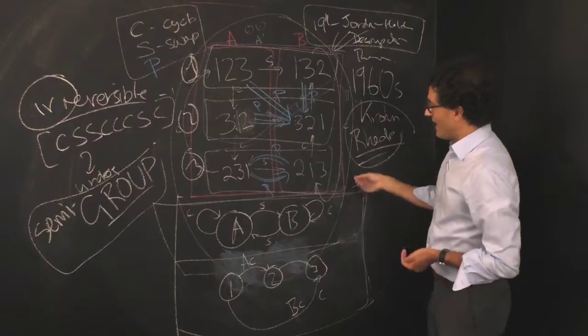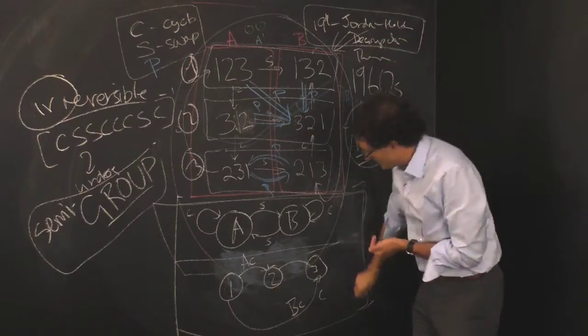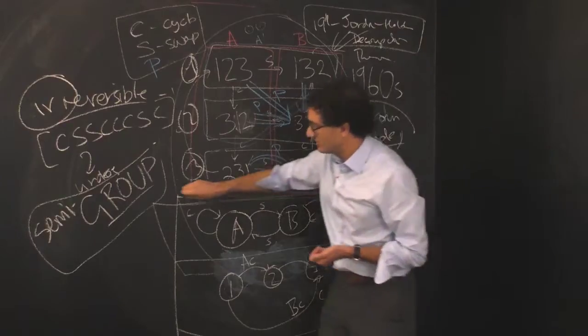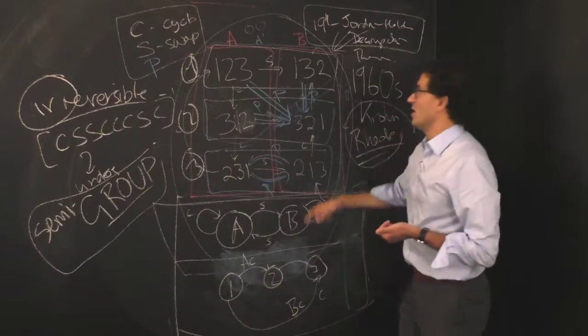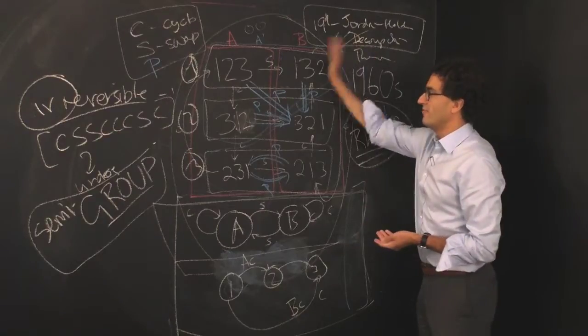What Krohn and Rhodes proved is that, in fact, even though you had violated one of the assumptions of the Jordan-Holder decomposition, it was still possible to do this. It was still possible to find coarse grainings, equivalence classes,